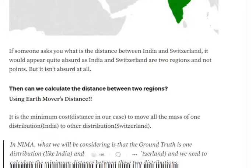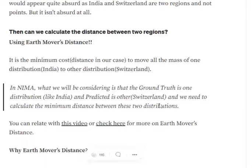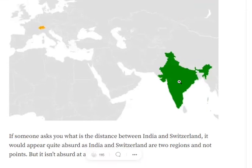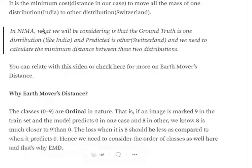This is what Earth Mover's Distance helps us to do. It is the minimum cost to move all the mass from one distribution, assume from India, to another distribution, that is Switzerland. This gives us a distance between the two regions that we have. To calculate the distance between two regions, we're trying to calculate the minimum cost required to move all the mass from this particular area to this particular area.